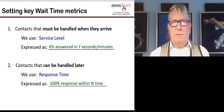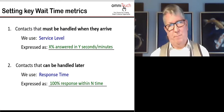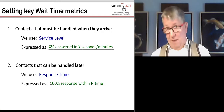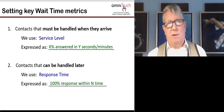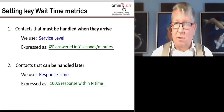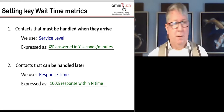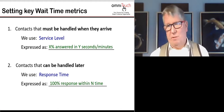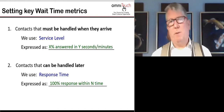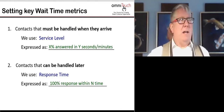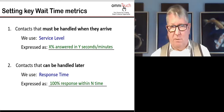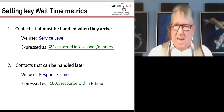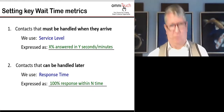When you have two different categories, there are two different wait time metrics. For contacts that need to be handled when they arrive, we use service level — expressed as: X percent will be answered in Y seconds or minutes. For contacts that can be handled later, we use response time — for example: we will handle 100% of our emails within two days, 100% of correspondence within three days, 100% of serious complaints within four days.